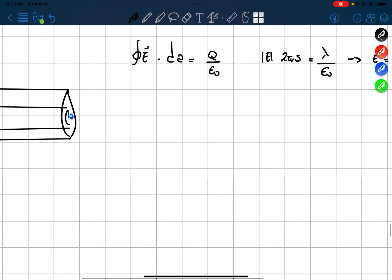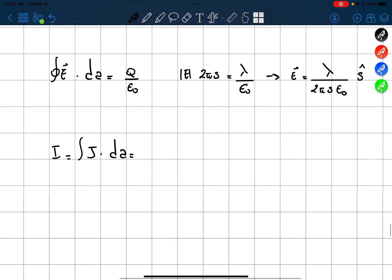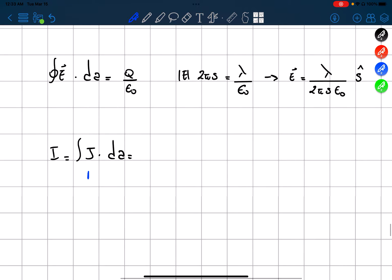Now that we found this, we said that our current is equal to the integral of our current density times the area. But already we said that thanks to the equation 7.3, J is equal to our constant times the electric field. So we have our constant times the integral of the electric field over the area.